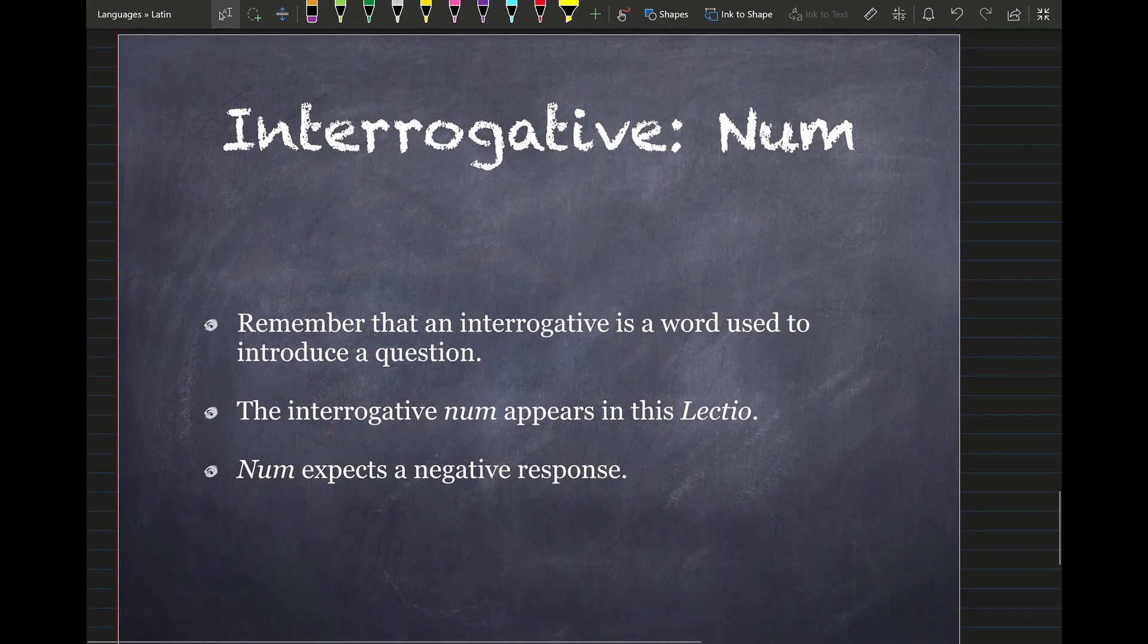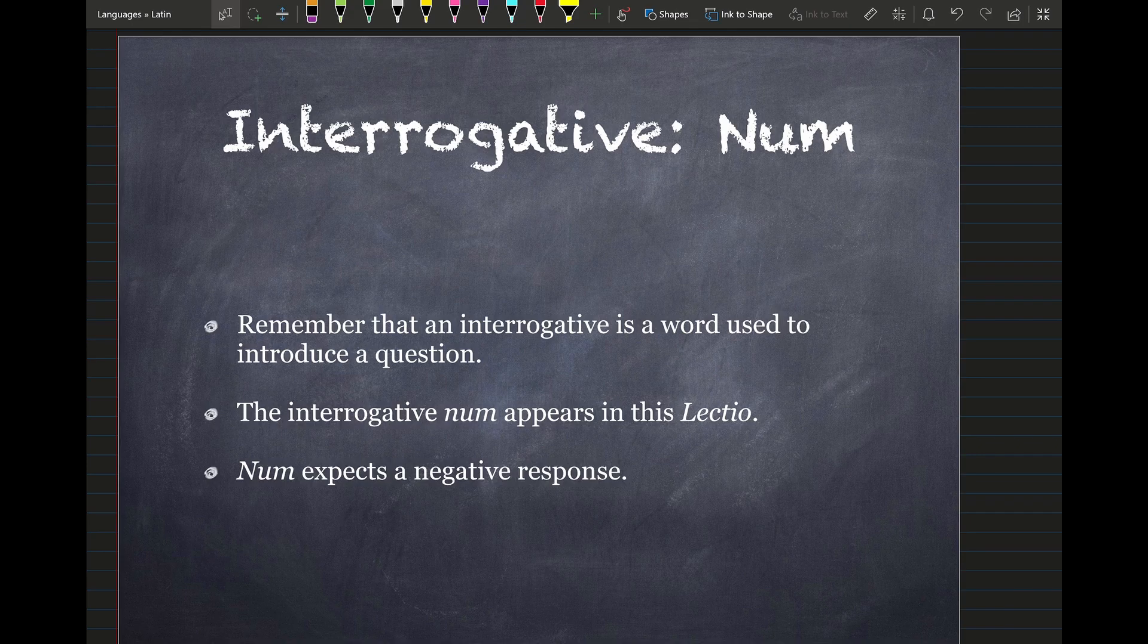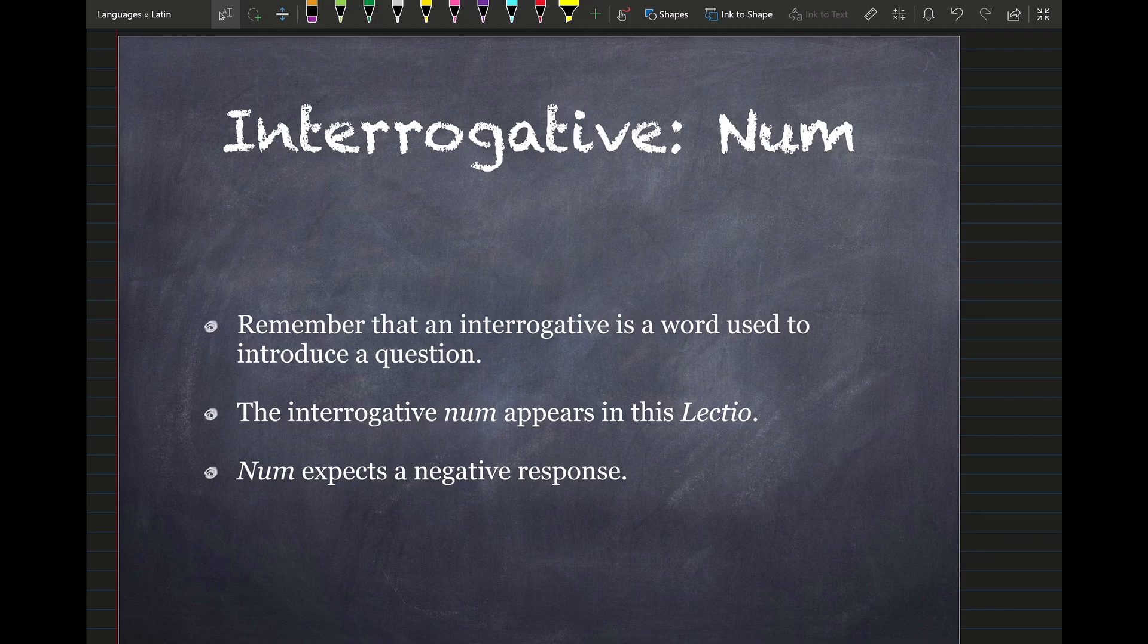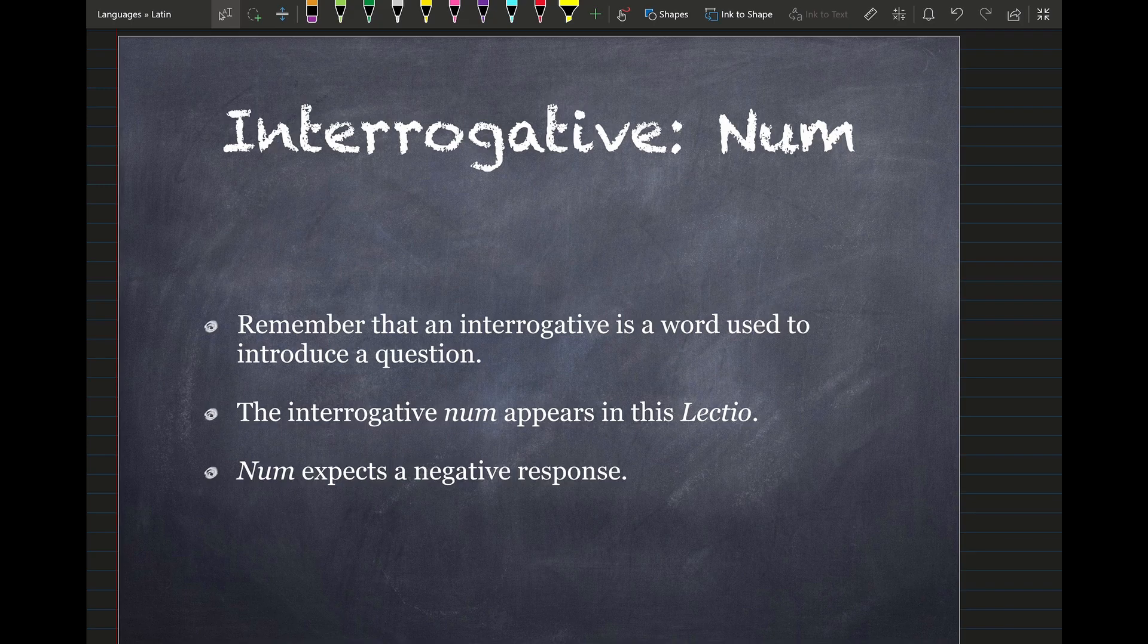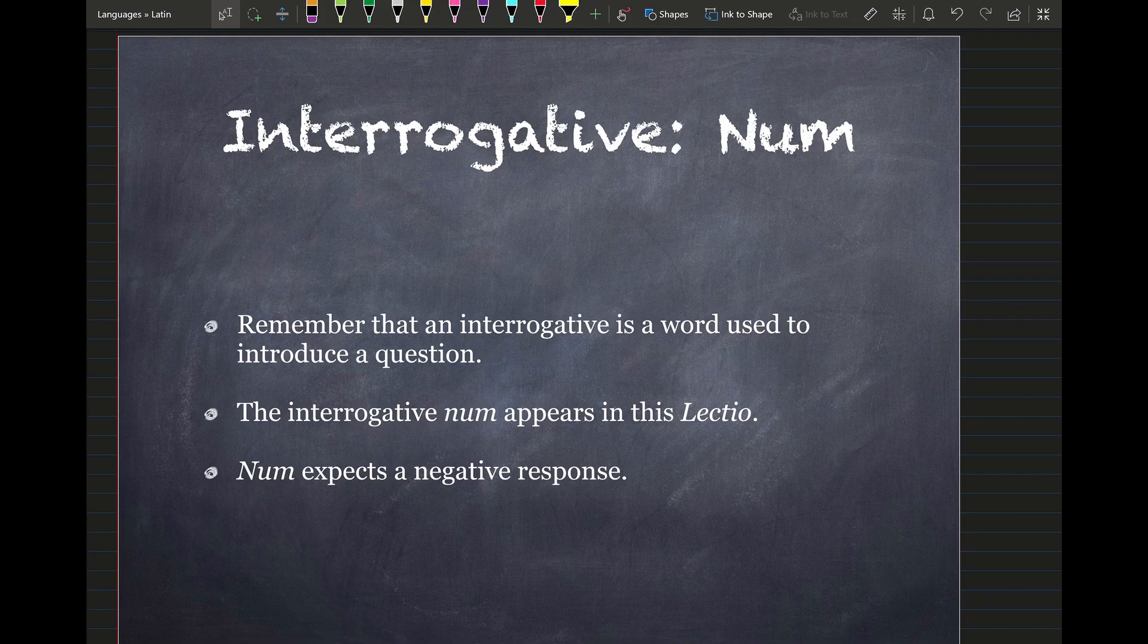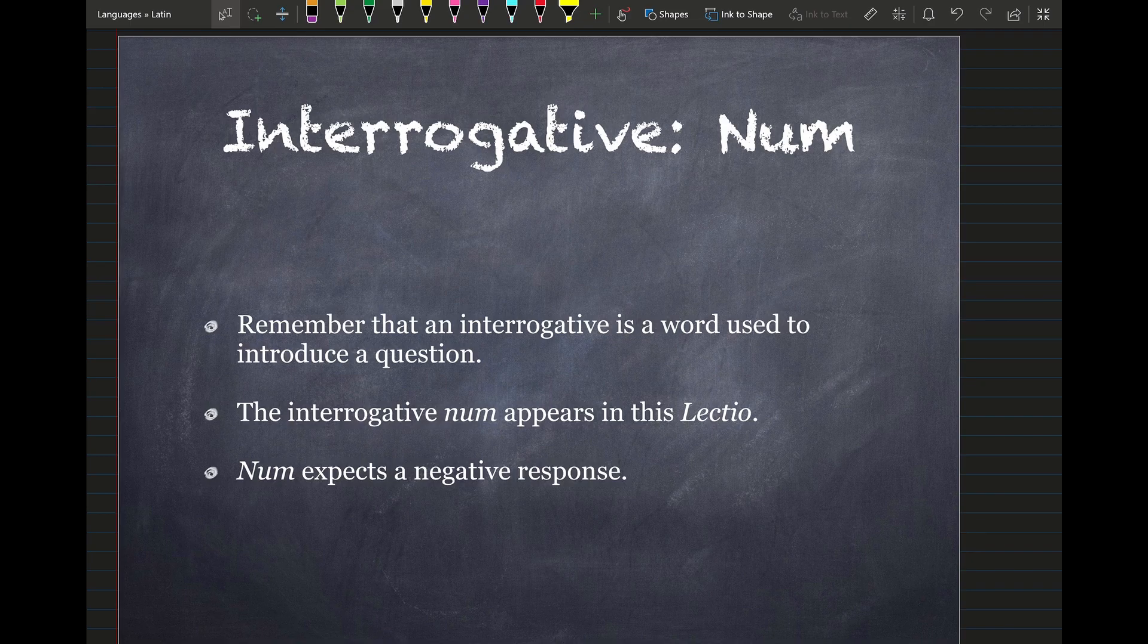Moving on. So we saw the enclitic nay last time. It introduces a question that expects a positive or a negative answer. This time we're going to see the interrogative num. Remember that an interrogative is a word used to introduce a question. The interrogative num expects a negative response only. It only expects a negative response. So you're going to see a negation of some sort in the sentence that follows it.